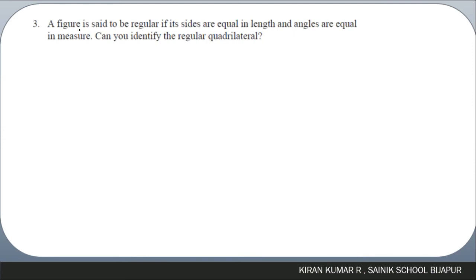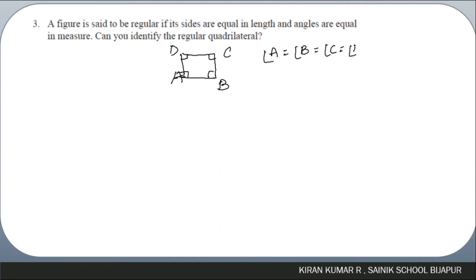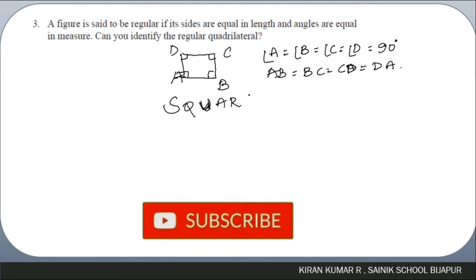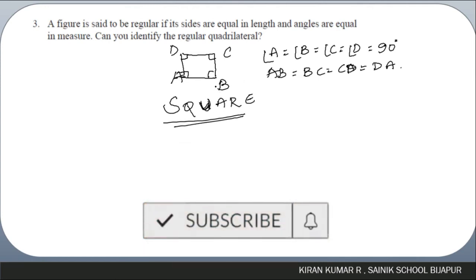Question number three: a figure is said to be regular if its sides are equal in length and angles are equal in measure. Can you identify a regular quadrilateral? If all sides are equal and all angles are equal to 90 degrees — naming it ABCD, angle A = angle B = angle C = angle D = 90 degrees, and AB = BC = CD = DA — that is a square. So a square is the regular quadrilateral.